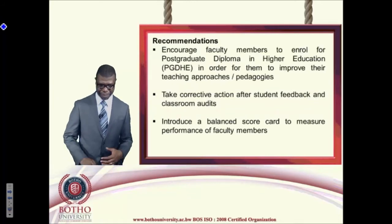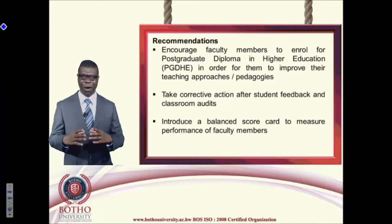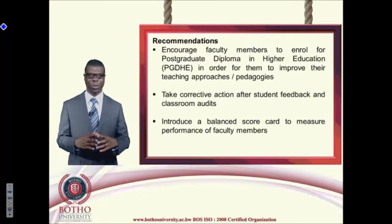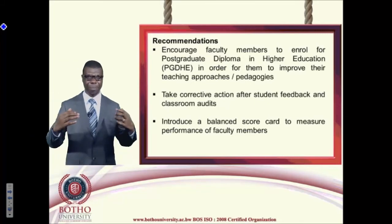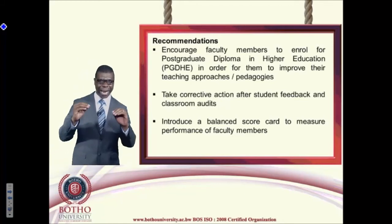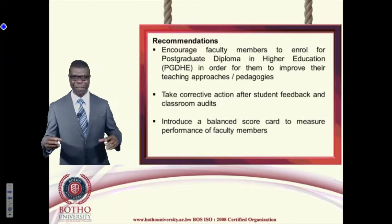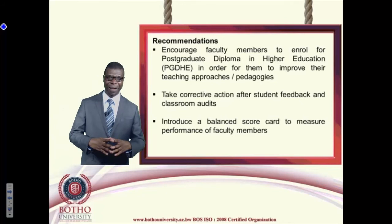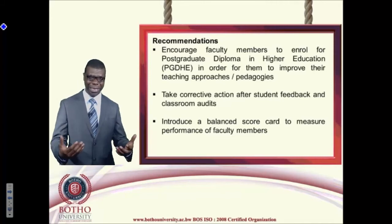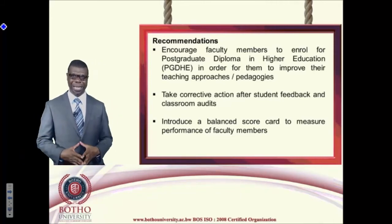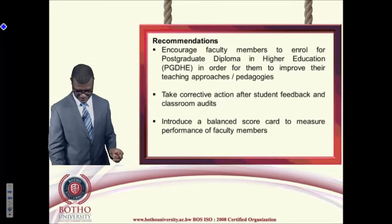Management by objective should be implemented to remove the element of bias. Faculty members should be enrolled in a postgraduate diploma in higher education so they can improve their teaching approaches and pedagogies. Collective action should be taken following student feedback and classroom audits, as currently there is no follow-up, which diminishes their importance to stakeholders. The balanced scorecard can also be used to measure the performance of faculty members.